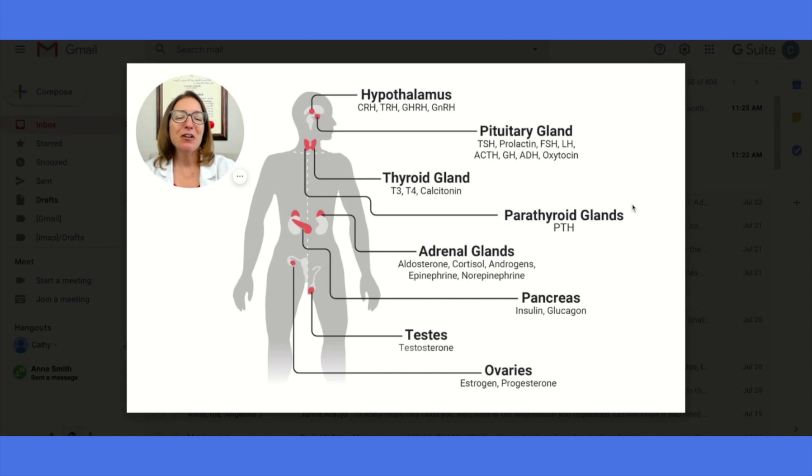Okay. And then we are going to move on to the parathyroid glands. So we have four parathyroid glands located right next to the thyroid gland, and they produce parathyroid hormone, or PTH.